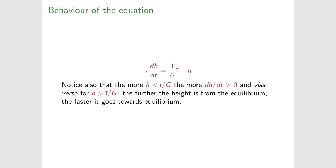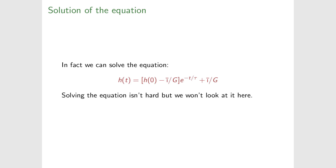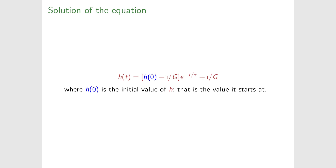We can write down the analytic solution: h(t) = (h(0) − i-bar/G) · e^(−t/τ) + i-bar/G. We won't go through how to solve it — it uses an integrating factor. In the solution, h(0) is the initial condition, the value at t = 0. The term e^(−t/τ) is the exponential function, also written exp(−t/τ), one of the standard functions of mathematics.